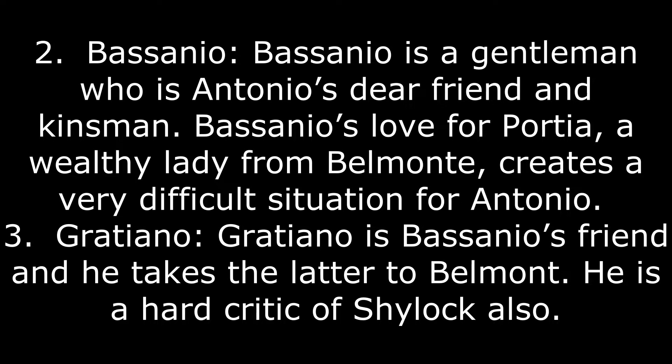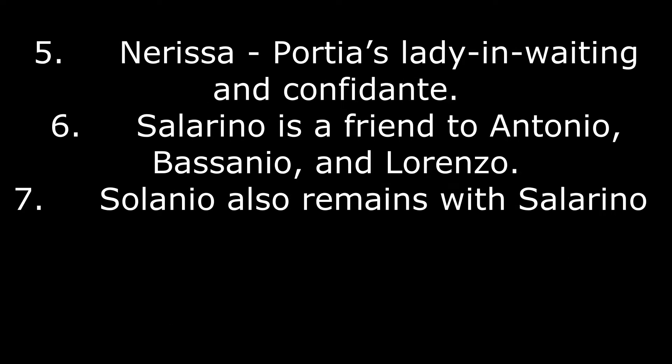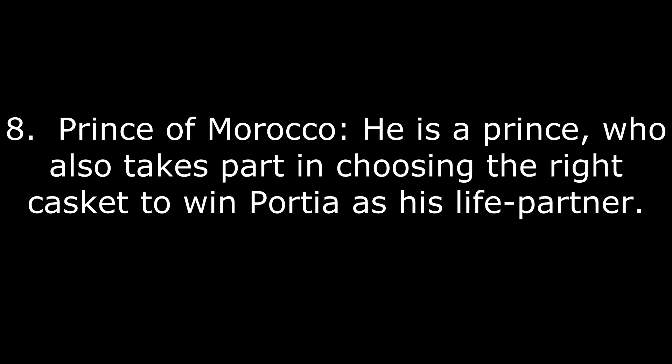Gratiano is Bassanio's friend and a hard critic of Shylock's conduct. Portia is a wealthy heiress of Belmont. Her father died after making a will in which he bound his daughter Portia by a vow regarding the choice of her husband by means of a lottery — choosing the right casket that contains Portia's portrait. Her role in the play is of utmost importance. Nerissa is Portia's lady-in-waiting and confidante. Salarino is a friend of Antonio, Bassanio, and Lorenzo. Solanio also remains with Salarino. The eighth character is the Prince of Morocco, a prince who takes part in choosing the right casket to win Portia as his life partner.